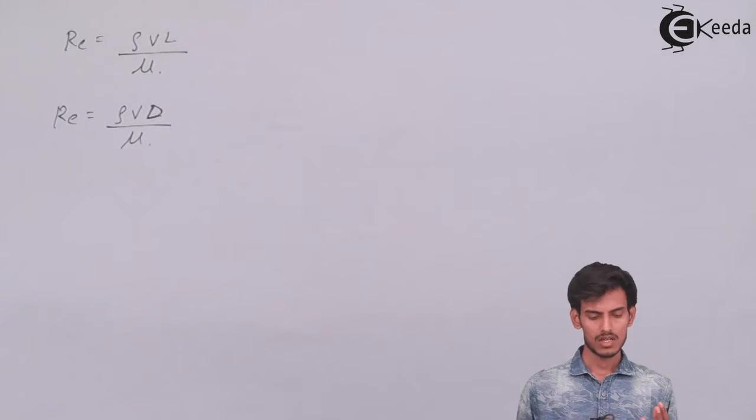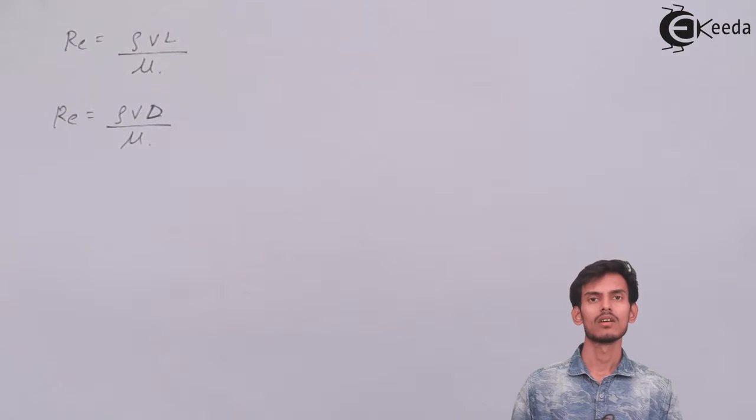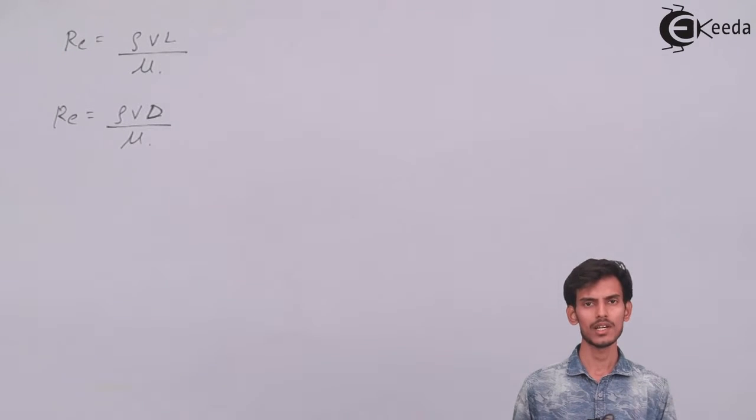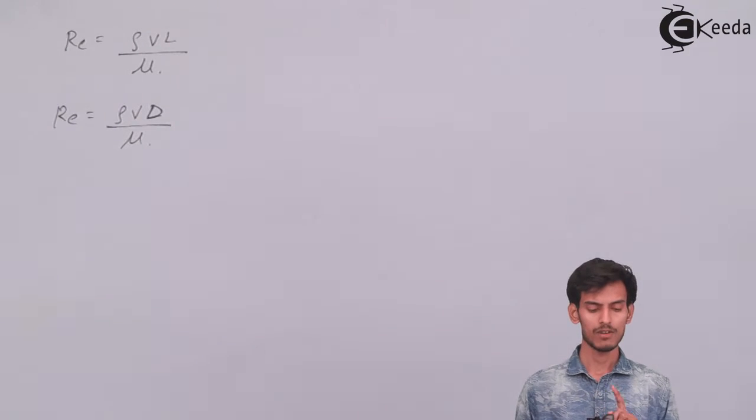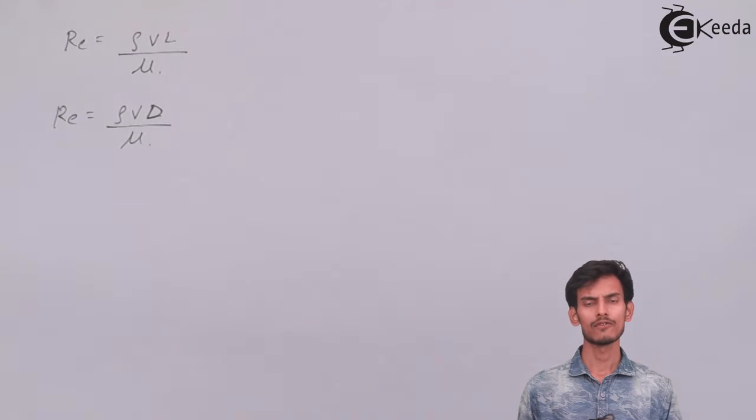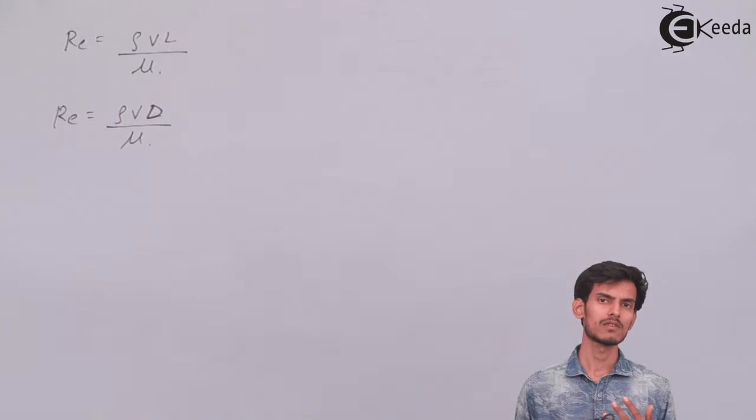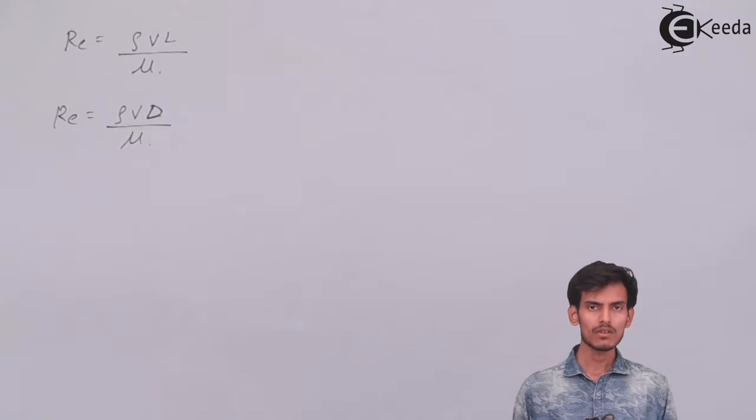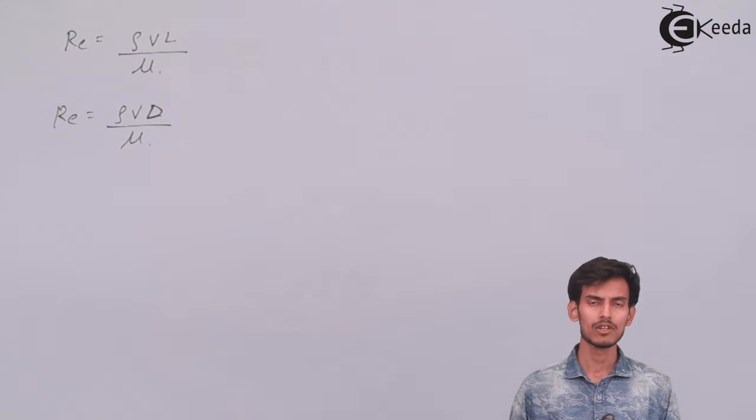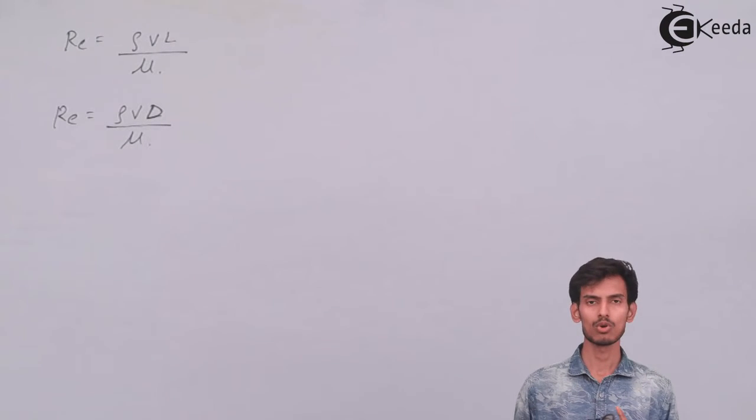ρvD/μ. The difference is when the fluid is flowing through a plate or through a pipe. Whenever the fluid flows through a pipe we use diameter and not length. Whenever the fluid flows through a flat plate, which you'll come across when you study fluid mechanics in detail, there you'll use the length of the plate. For our syllabus there's only flow through pipes, so the formula changes to ρvD/μ.